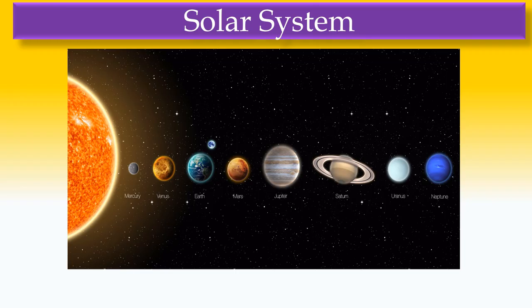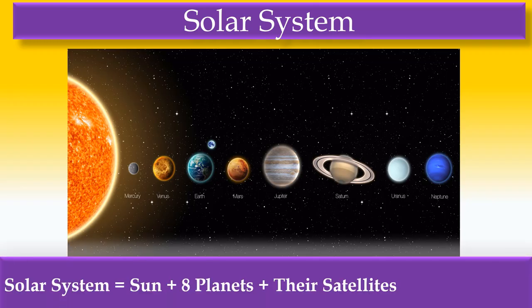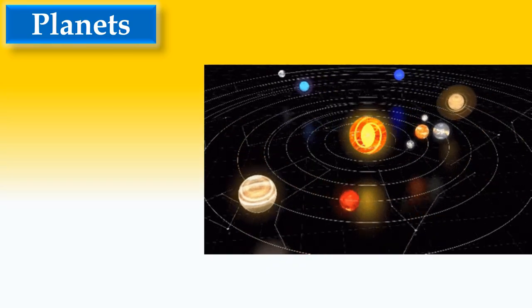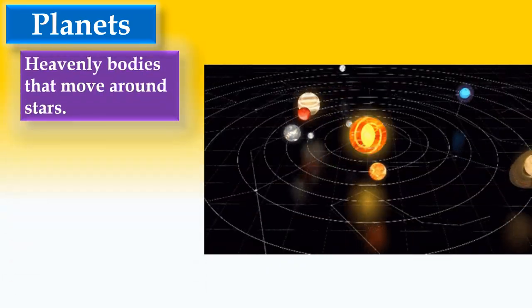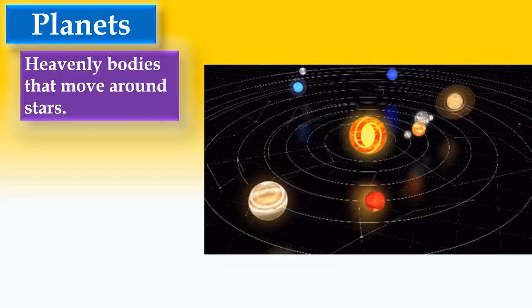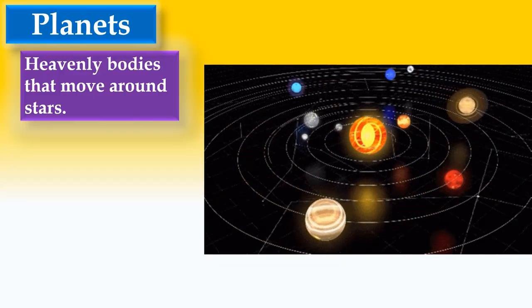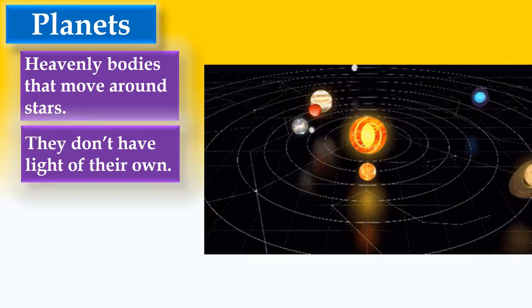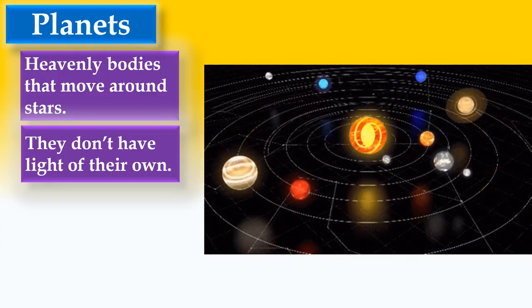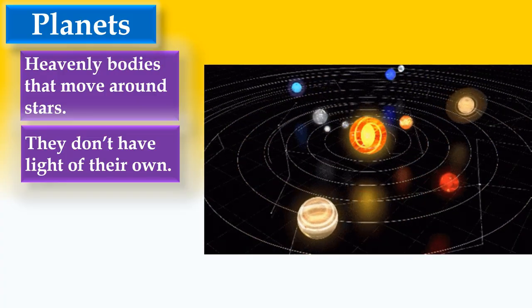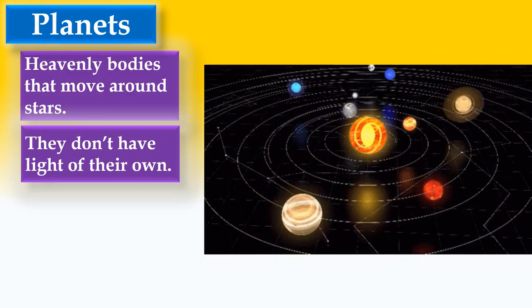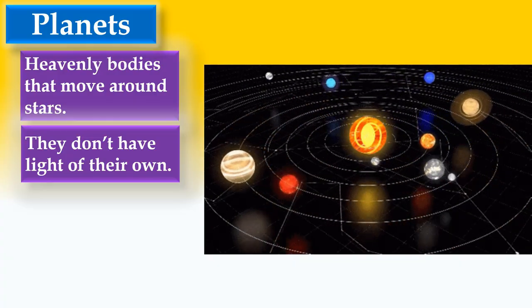Let us see more about planets. Look at the image here. We can see the Sun at the center of the solar system and all eight planets—Mercury, Venus, Earth, Mars, Jupiter, Saturn, Uranus, and Neptune—are moving around the Sun. Earth is our planet and does not have its own light. We get light from the Sun, and that is our star.